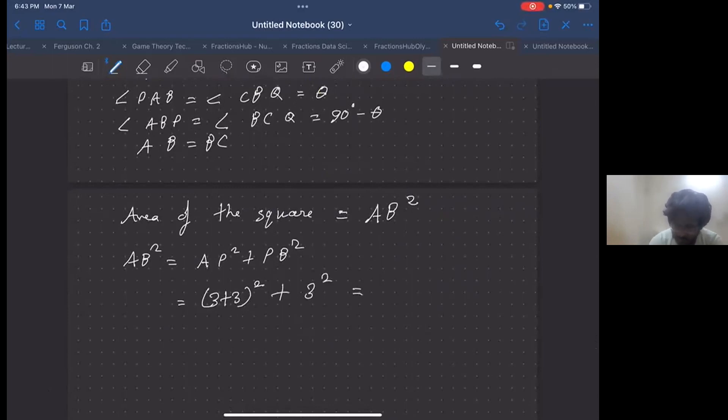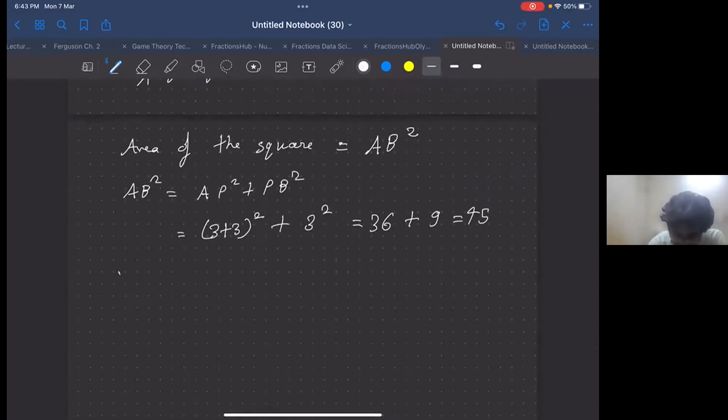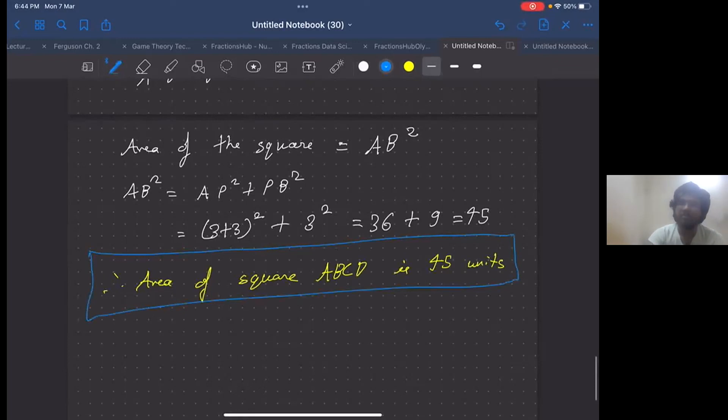This equals 6 squared plus 3 squared, which is 36 plus 9, equals 45. And that is exactly our answer. Therefore, the area of square ABCD is 45 square units. And now we have solved question number one. Thank you.